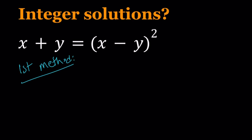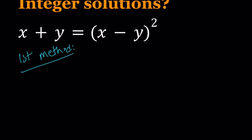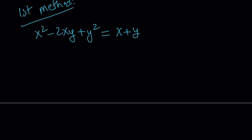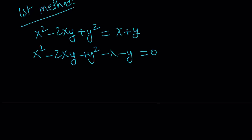For our first method, I'm going to go ahead and square what's on the right-hand side and set it equal to x plus y. Now I want to put everything on the same side, so let's subtract x plus y. I want to turn this into a quadratic equation. We can do it in two different ways because of the symmetry that we have.